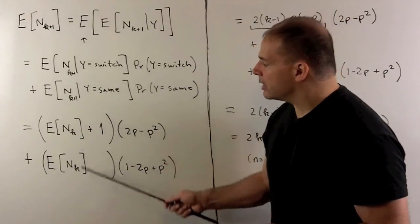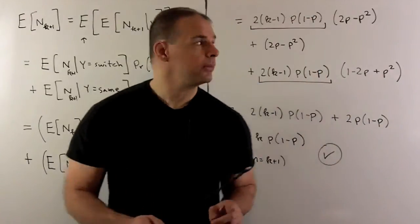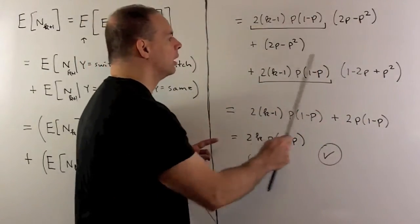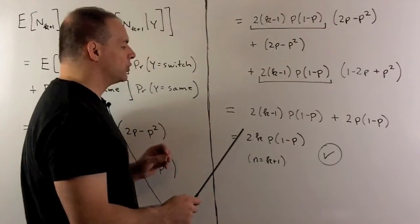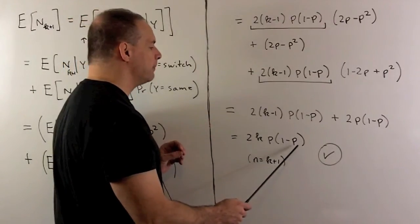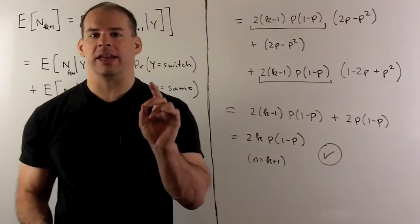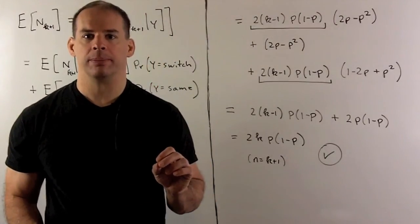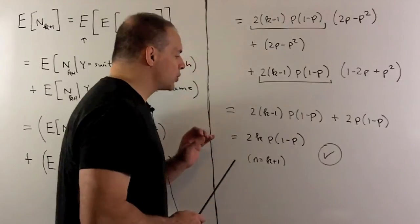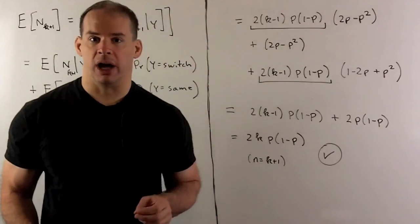Now, this, we can expand out. When it collapses, we wind up with 2K P times one minus P. And that's what we were hoping for to show the formula in the case where N is equal to K plus one. So, that proves our induction step and that gives us our proof by induction.